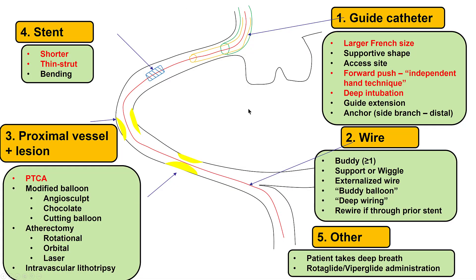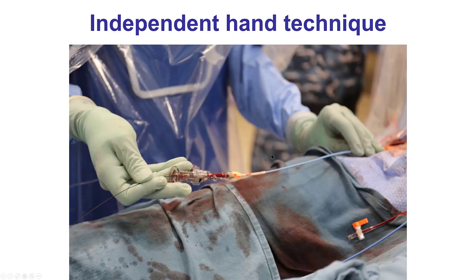Multiple things we did to achieve the delivery: we used the 7 French guide, the independent hand technique, and we tried to deeply intubate the guide — though of course there is the risk of dissecting the LIMA, so that should be done with care. We also used a relatively short, thin strut stent and predilated the lesion. But the key for successful delivery in this case was the independent hand technique: the left hand was supporting the guide catheter, keeping it in place with forward pressure, while at the same time the right hand was providing steady push on the stent to make it through the tortuosity.